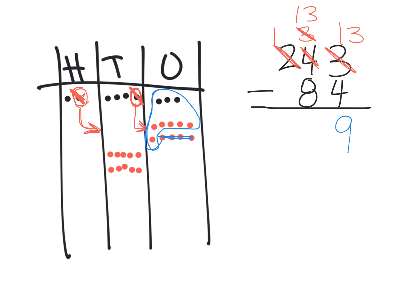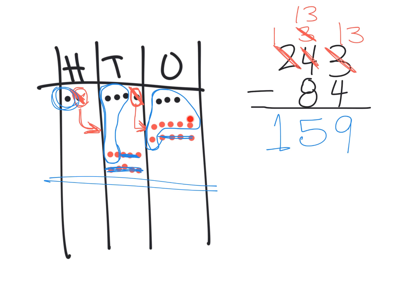Now we have 13 tens — not to be confused with the 13 ones. We're supposed to cross off 8 of them, and that's easy now. Cross off 5 down here and 3 more, leaving us with 5 tens. Sure enough, 13 minus 8 is 5. Lastly, we have 1 hundred and take away nothing, so we end up with that 100. Our model confirms the answer: 1 in the hundreds, 5 in the tens, and 9 in the ones.